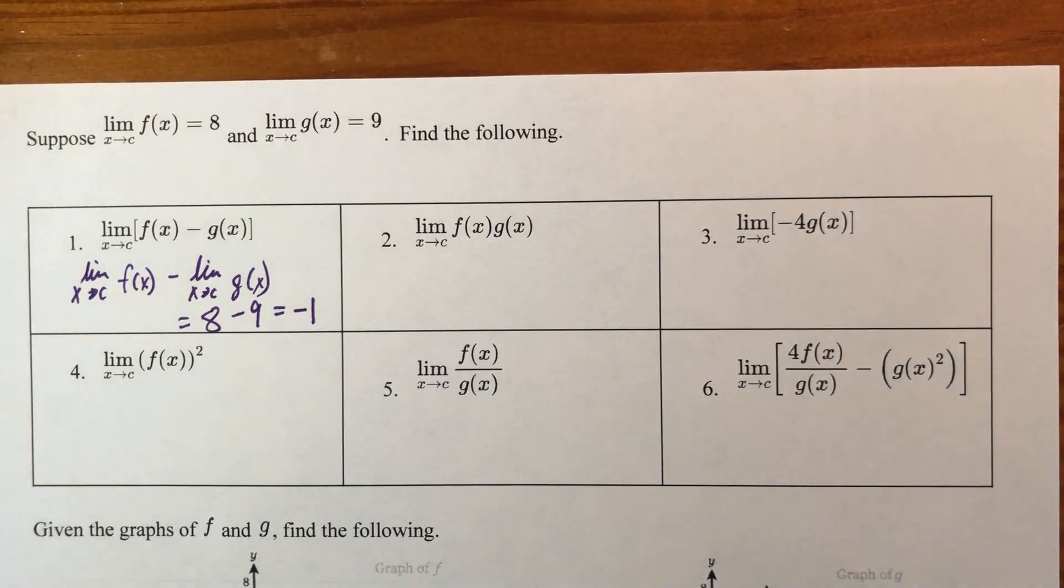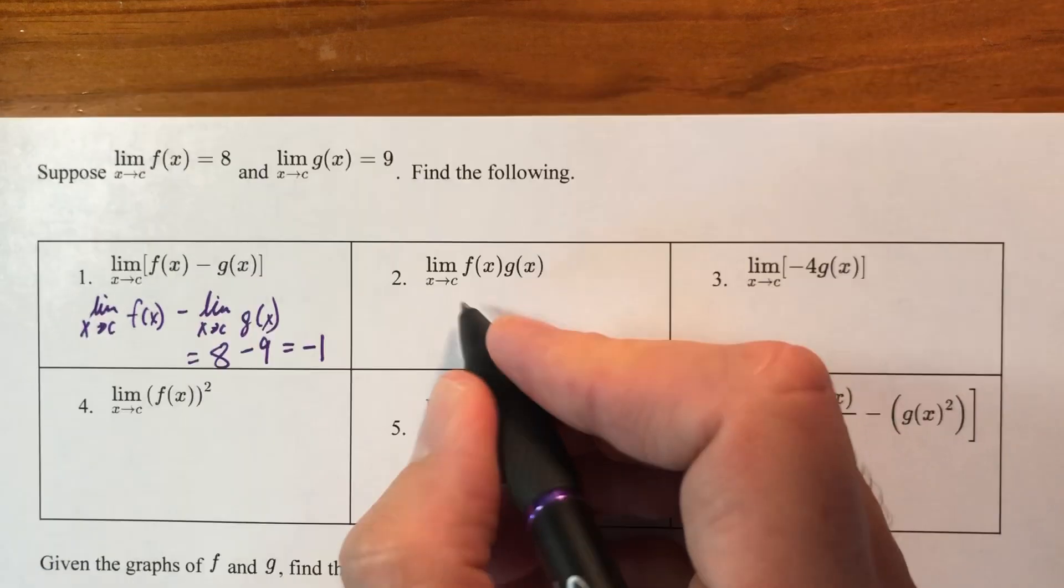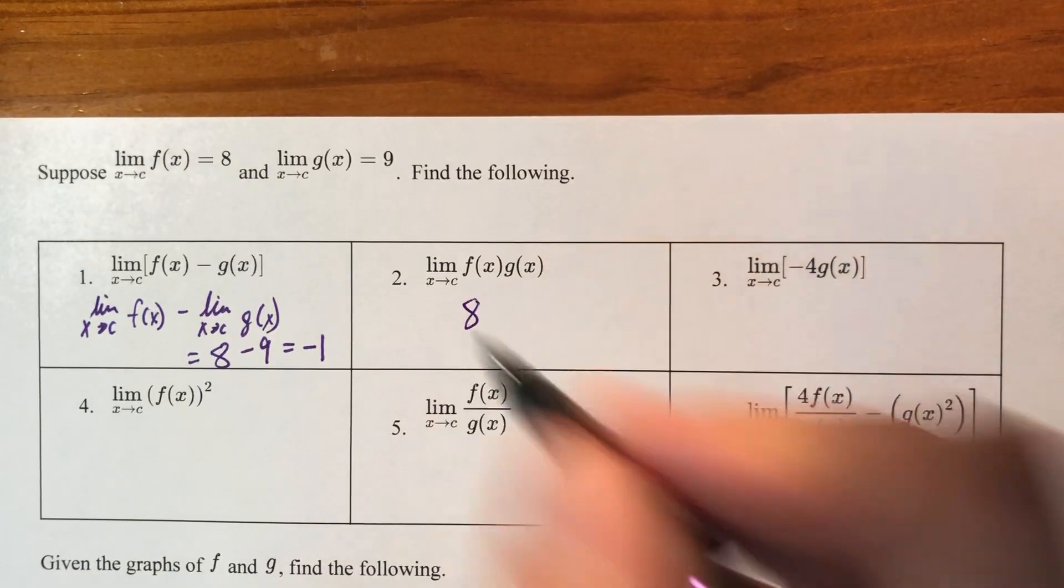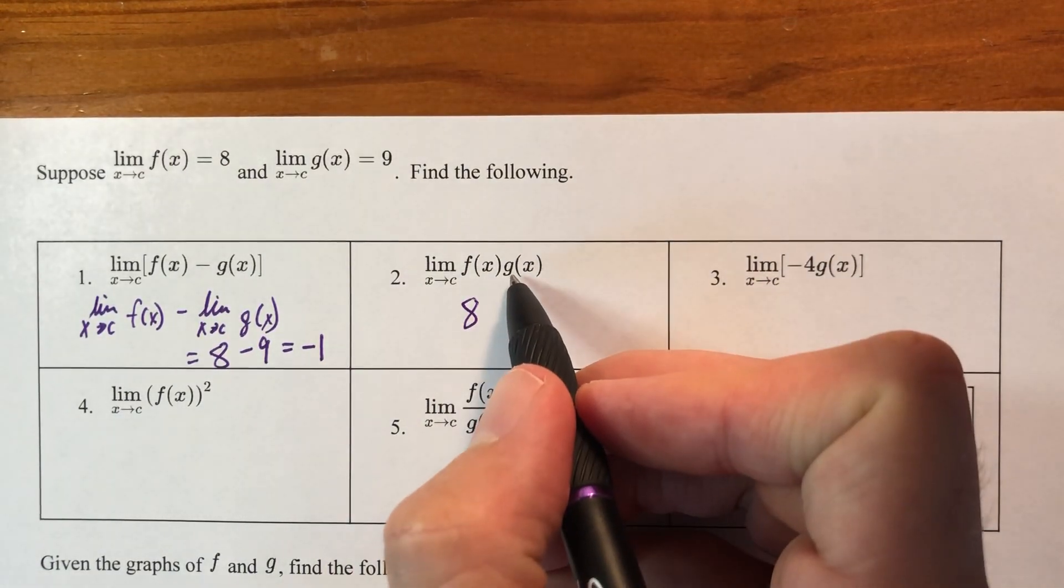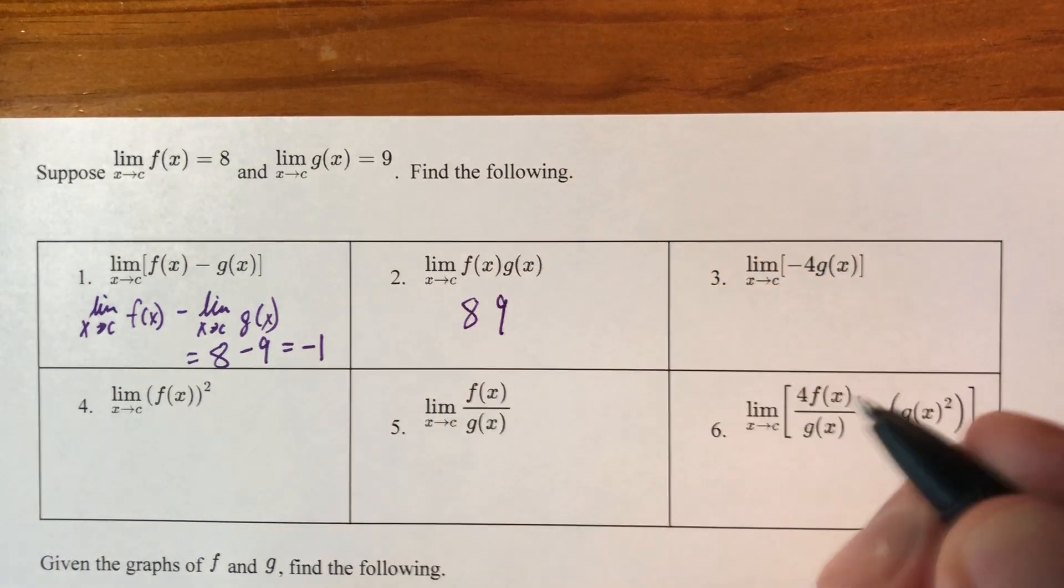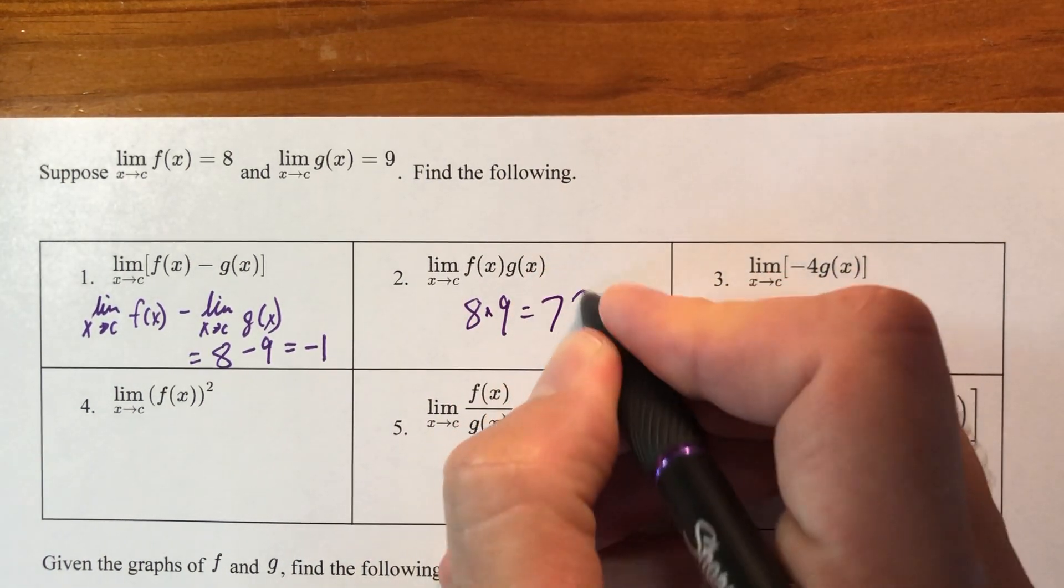So, let's just jump in. Again, multiplying two things, I have the limit as x approaches c for f, that's 8. The limit as x approaches c for g, that's 9. It is not 89. It's 8 times 9, so 72.